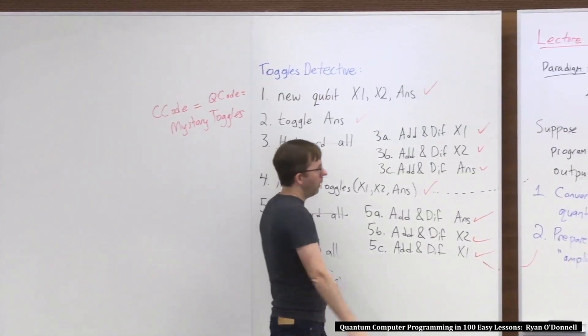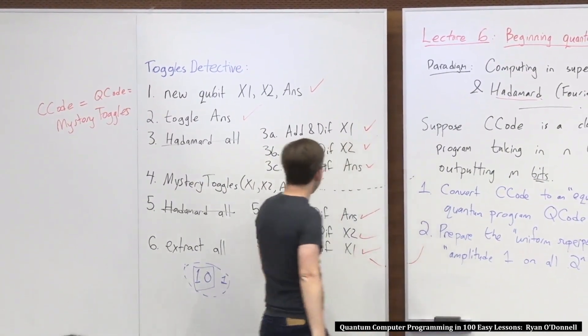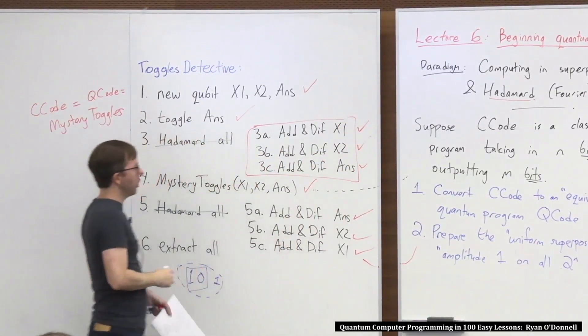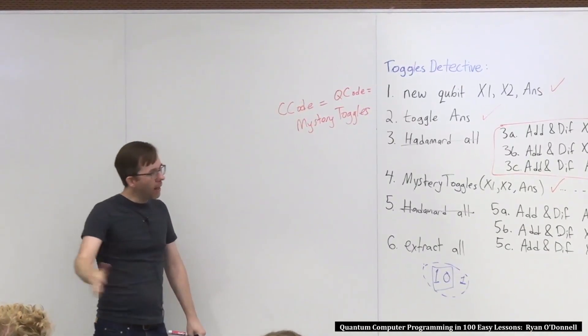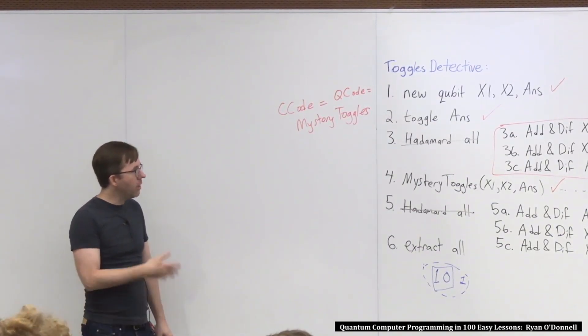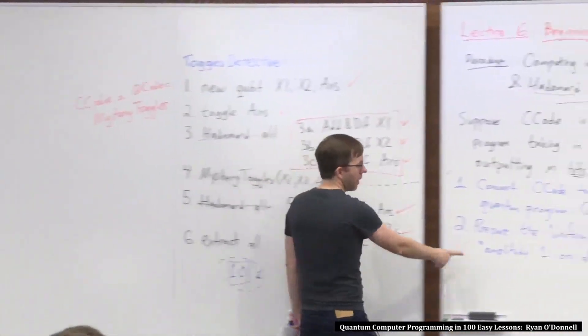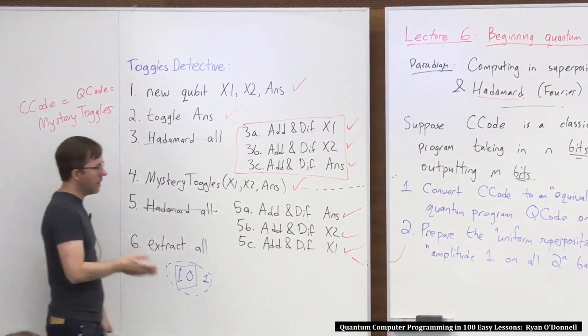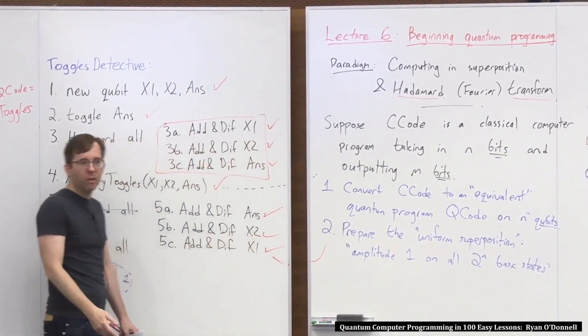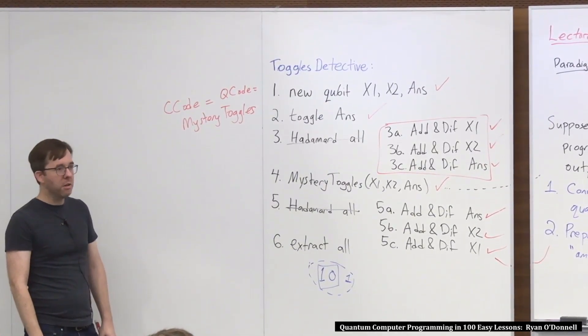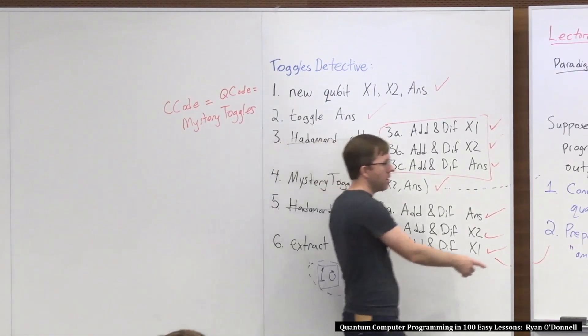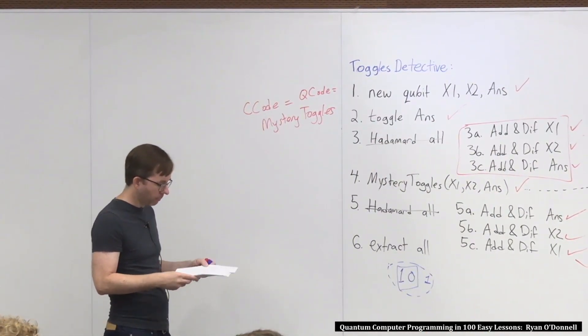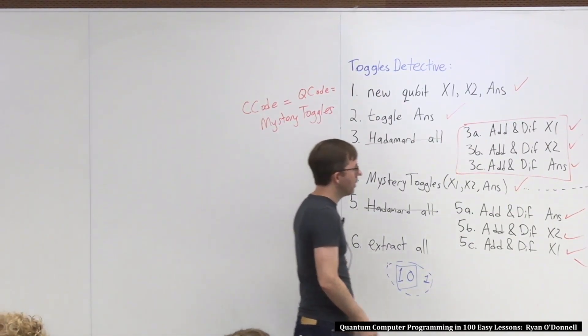That's kind of that for mystery toggles. And what about this? Prepare the uniform superposition. That's basically exactly this. It's not very hard to show, and we'll see it pretty soon, that if you start a bunch of qubits at all zeros, which is the typical way you start, and then you do Hadamard all to them, or add and diff all, you get to this state. So that's why I said this is actually a very easy step, and it only takes n instructions. So if your code has a thousand bits that it works on, that's no problem.